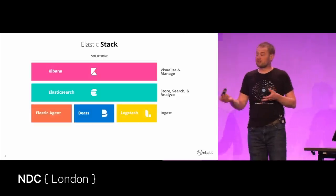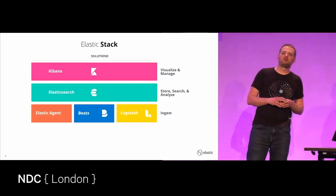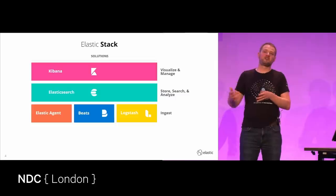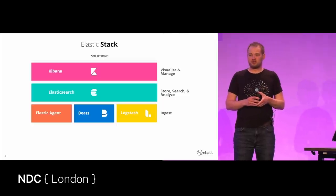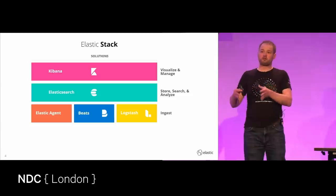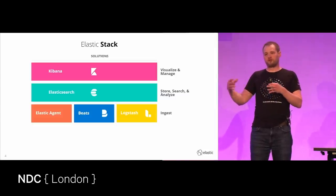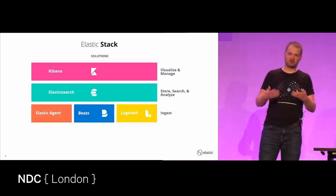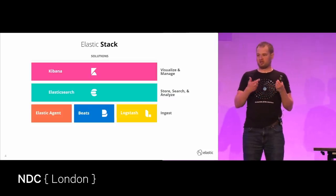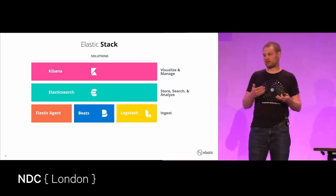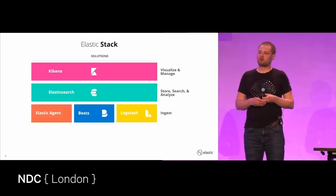We also need to get data into Elasticsearch. Elasticsearch has an API, and we'll be talking about using the .NET client to interact with it. The most recent product for ingestion is Elastic Agent, which you can install on servers, services, and devices around your organization. You connect it to our fleet server and manage your fleet to collect log or metric data. Before Agent, we had Beats — a similar concept but requiring specific installations per server.